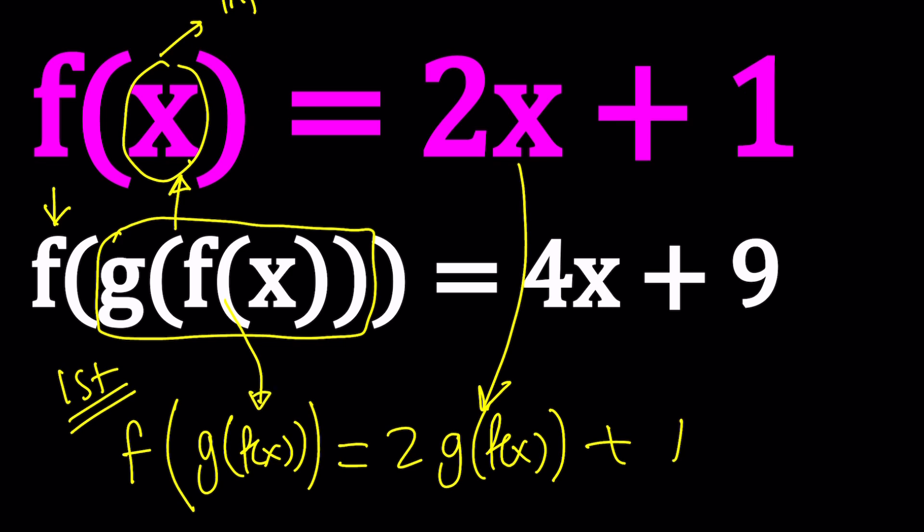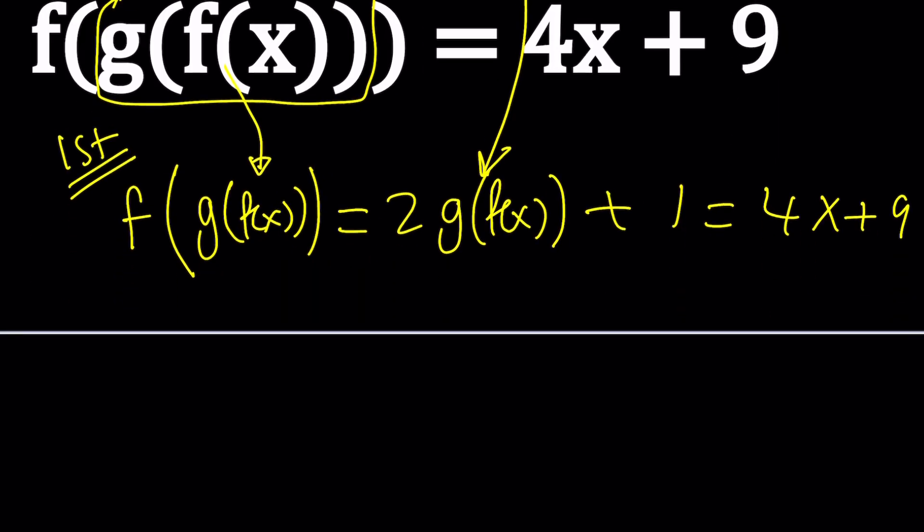And we do know what it is. What is f(g(f(x)))? It's 4x + 9. Awesome. Because this gives you g(f(x)). After a little bit of manipulation and solving equations, subtract 1. This is the composition of g and f. Divide by 2.